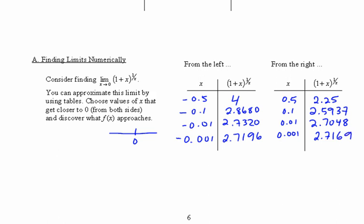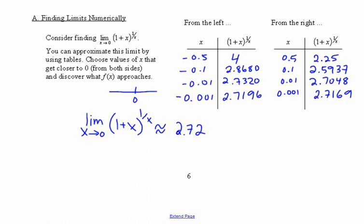So, we're going to approximate this. What is it approach? Approximately to two decimal places. So, the limit as x approaches zero for our function is approximately to two decimal places. Two point seven two. So, that's numerically. Right? From the left. From the right.